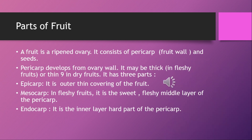A fruit is a ripened ovary. It consists of the pericarp, that is the fruit wall, and seeds. The pericarp has developed from the ovary wall. It may be thick in fleshy fruits or thin in dry fruits. It has three parts.